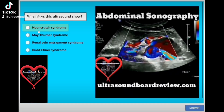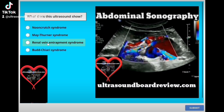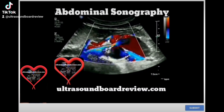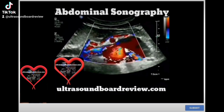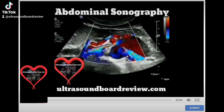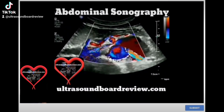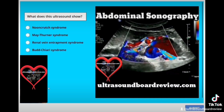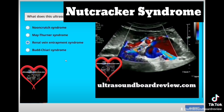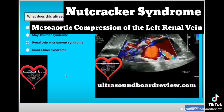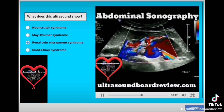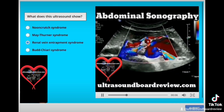What does this ultrasound show? A. Nutcracker syndrome. B. Mather-Nuner syndrome. C. Renal vein entrapment syndrome. Or D. Budd-Chiari syndrome? The answer is C, renal vein entrapment syndrome, also known as nutcracker syndrome, or meso-aortic compression of the left renal vein, which involves compression of the left renal vein between the superior mesenteric artery and the aorta. So the vein coming off the left kidney is being compressed by both the superior mesenteric artery and the aorta.